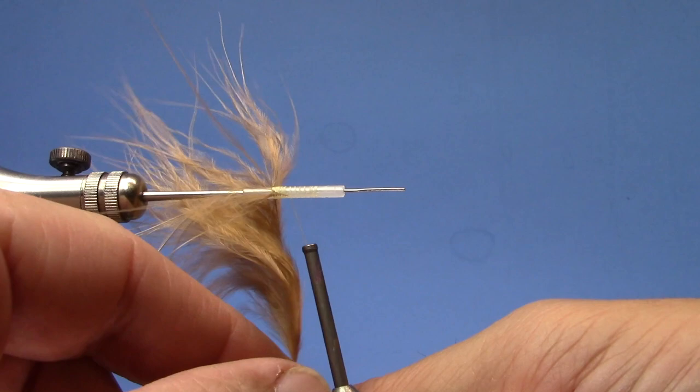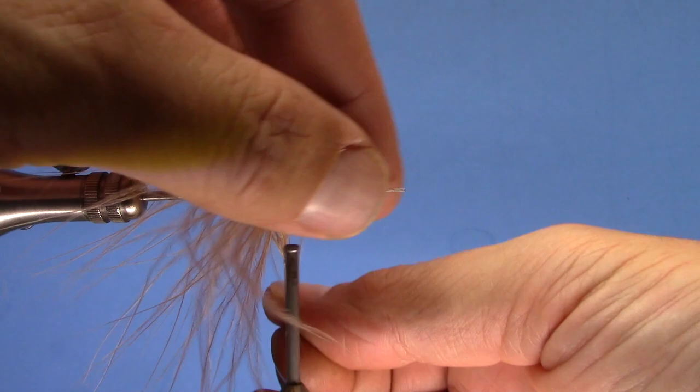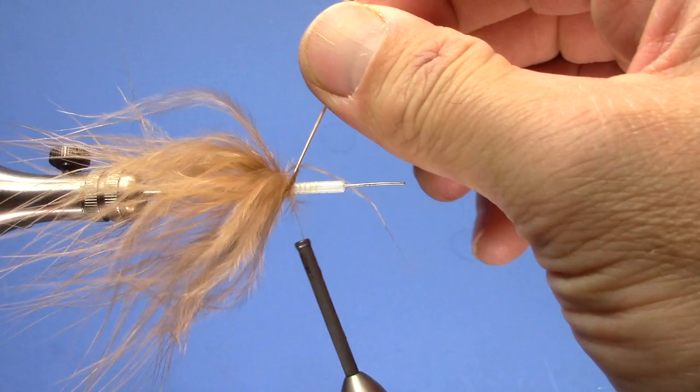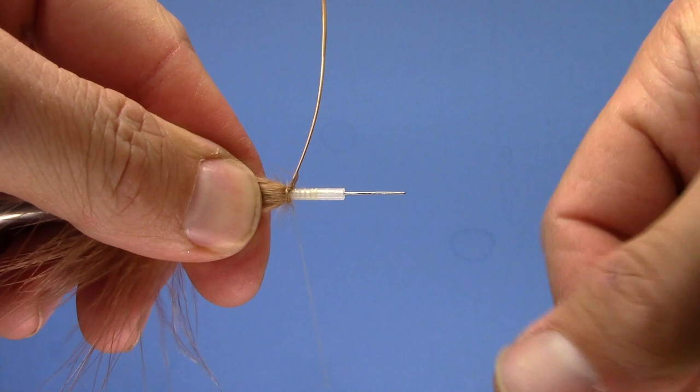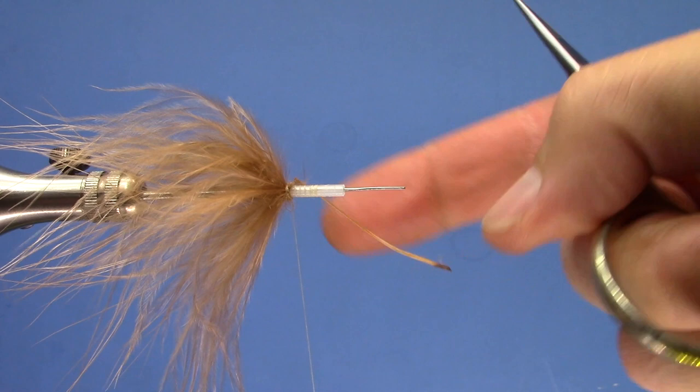We'll wrap that, just keep doing that as you go, keeping those feathers, fibers kind of palmering back. Wrap that and then tie off. Trim off our stem here.